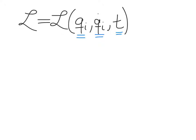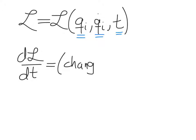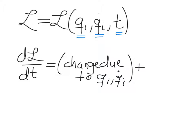One question you might ask is: how does the Lagrangian change with time? The Lagrangian can change with time in two ways. There can be a change due to qi and qi dot changing in time, but you can also have an explicit dependence of the Lagrangian on time — if t actually appears in the equation for the Lagrangian, you'll have this second term.